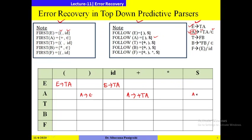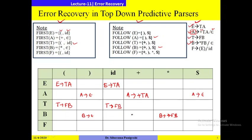For T → FB, a non-epsilon production, FIRST(T) gives open bracket and id, so under open bracket and id we write T → FB. For B → *FB, FIRST(*FB) gives *, so under B and column * we write B → *FB. For B → ε, compute FOLLOW(B): FOLLOW(B) is plus, closing bracket, dollar, so under plus, closing bracket, and dollar we write B → ε.